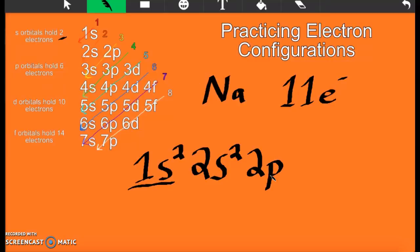2p². 2p. And p's can only hold 6. But we still need 7. So we need to fill up the p with 6. And move on to the next level, which would be 3s. That comes from right here. And we only have 1 electron left.